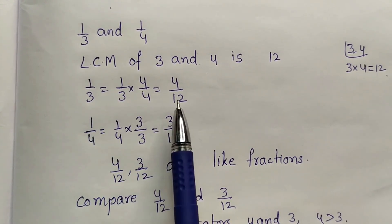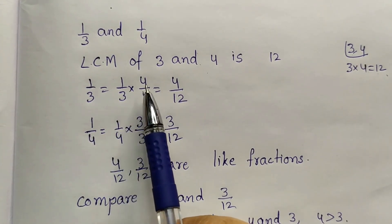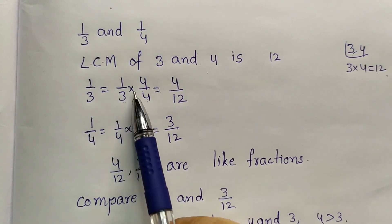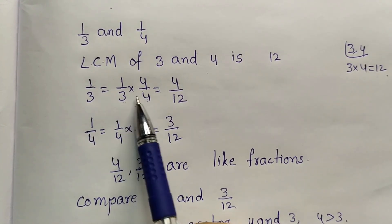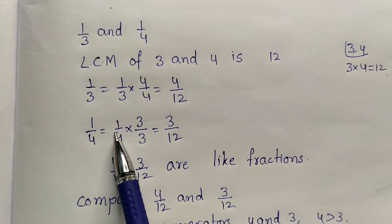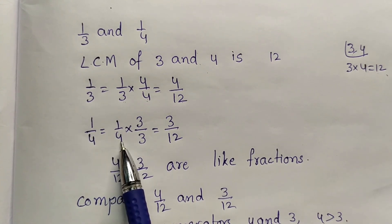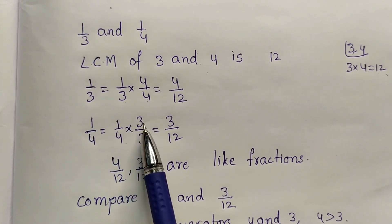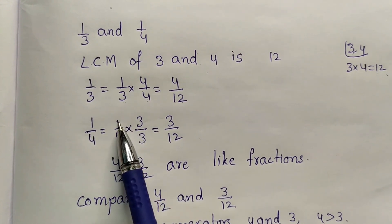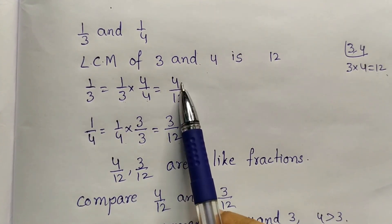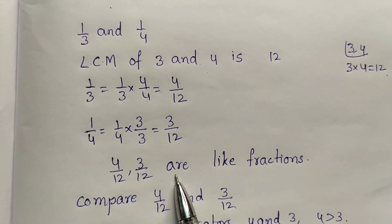We have to multiply the denominator and the numerator by 4. So 1 by 3 into 4 by 4 equals — multiply the numerators: 1 into 4 is 4, by 3 into 4 is 12. Next, 1 by 4: we have to make the denominator 12, so multiply the 4 by 3 — multiply the numerator and the denominator by 3. So 1 by 4 into 3 by 3 equals 1 into 3 = 3, 4 into 3 = 12. This became 3 by 12.